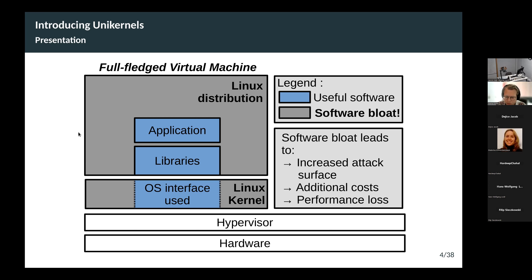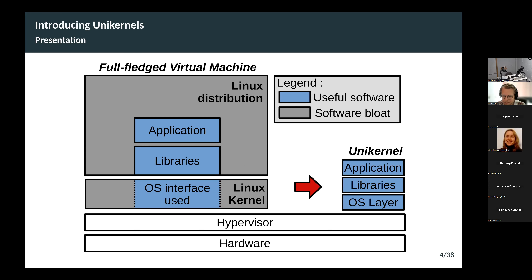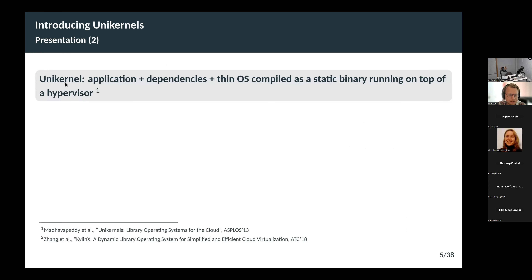One solution to this problem is to use what's called a unikernel. You take your application, just the software dependencies of your application, and you compile all of that with a very small operating system layer — think something very close to an embedded operating system that contains only what your application needs. This is all compiled into a static binary very similar to a kernel, which you can run as a virtual machine on top of a hypervisor. This significantly reduces software bloat. The unikernel definition: you take the application, its dependencies, and a small library operating system, compile all of that together into a static binary that can run on top of a hypervisor.